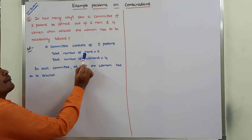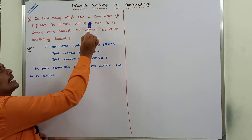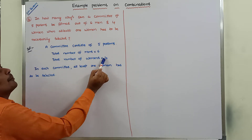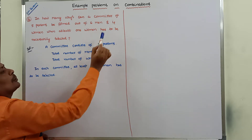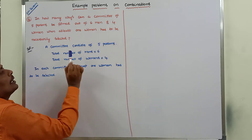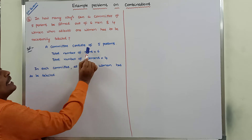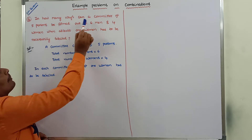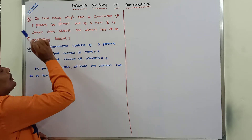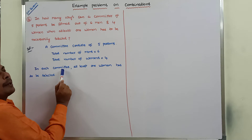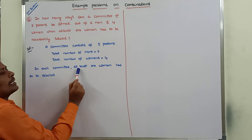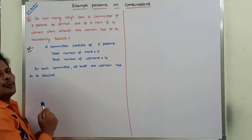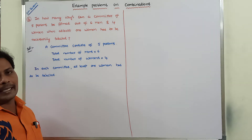Total number of men is equal to 6. Total number of women is equal to 4. A committee consists of 5 members. In each committee, at least 1 woman has to be selected.